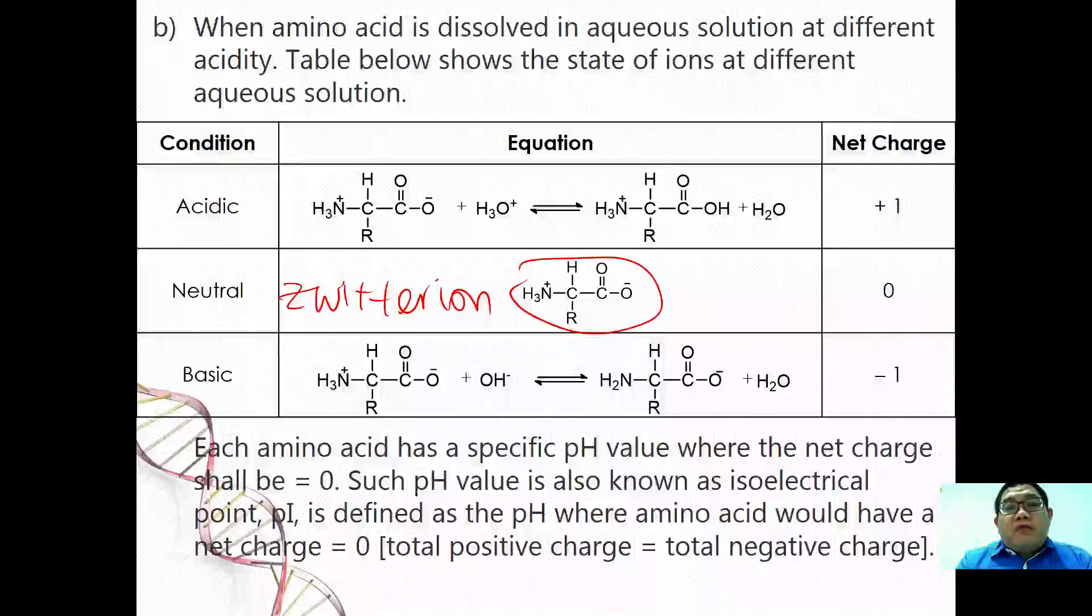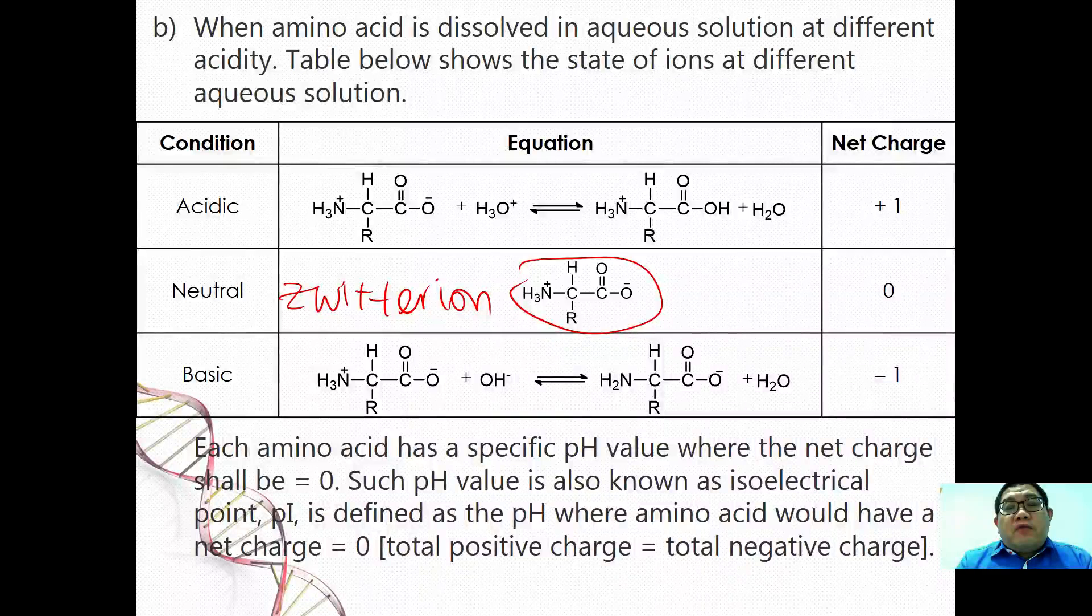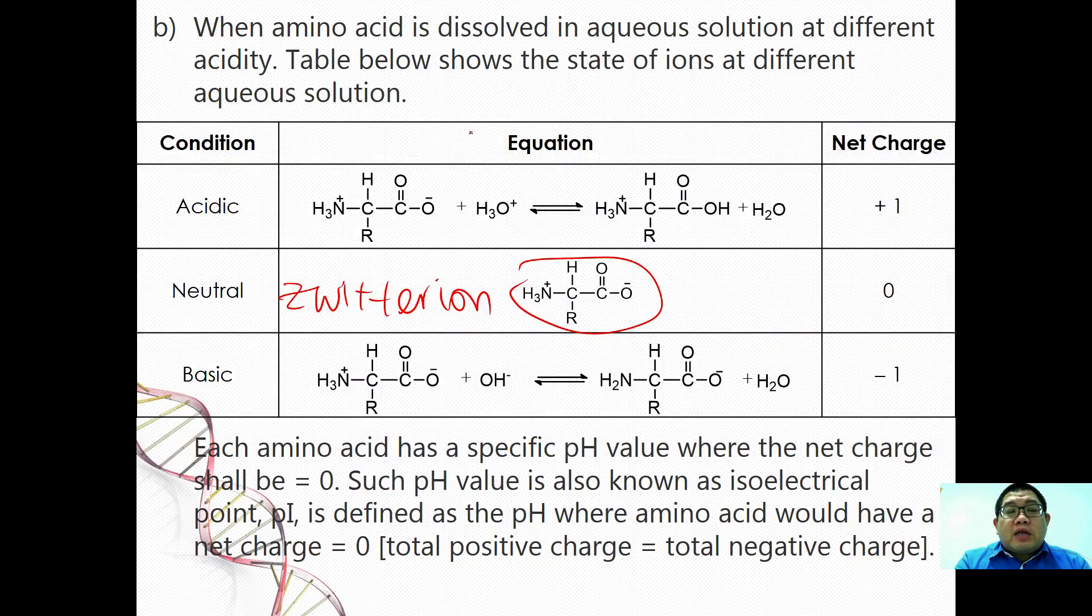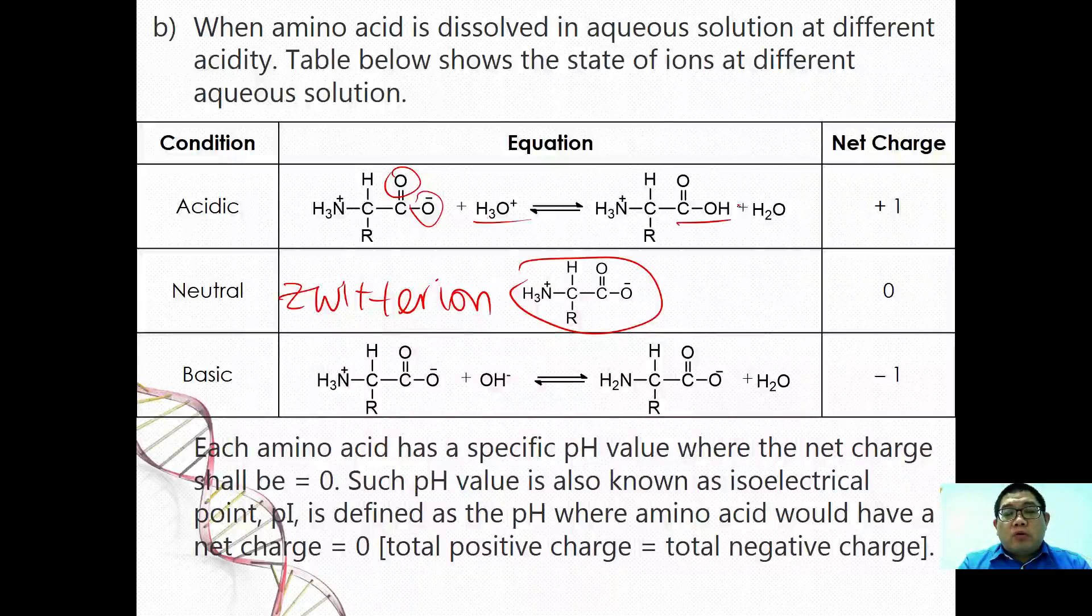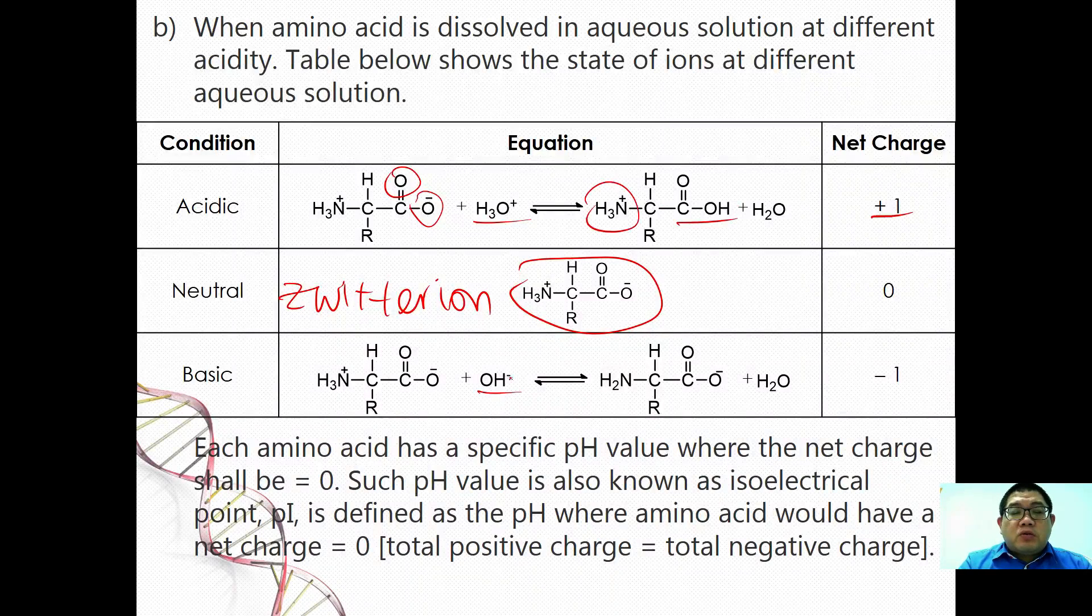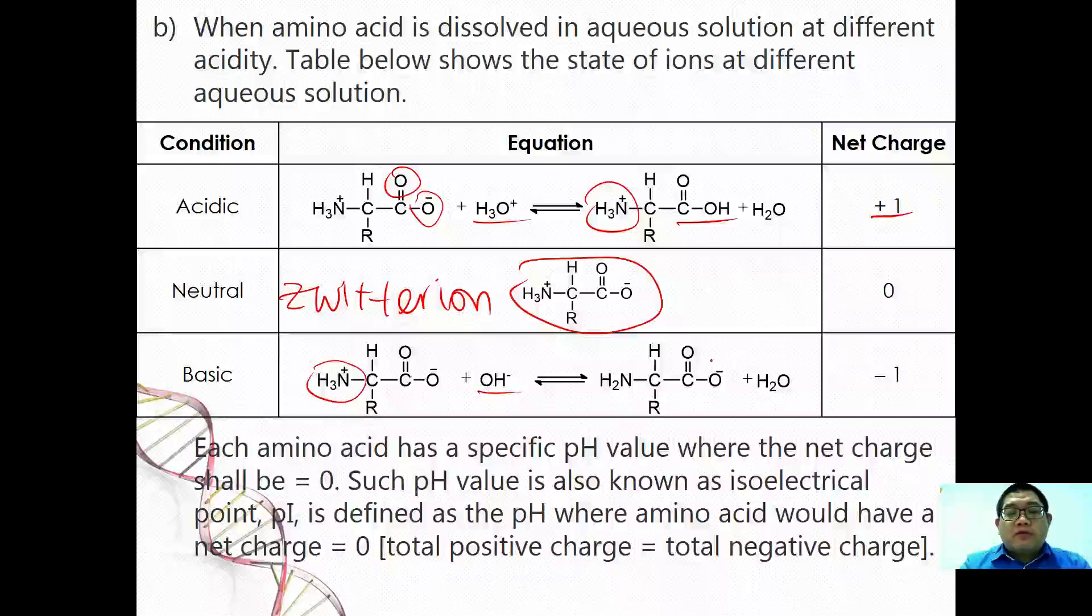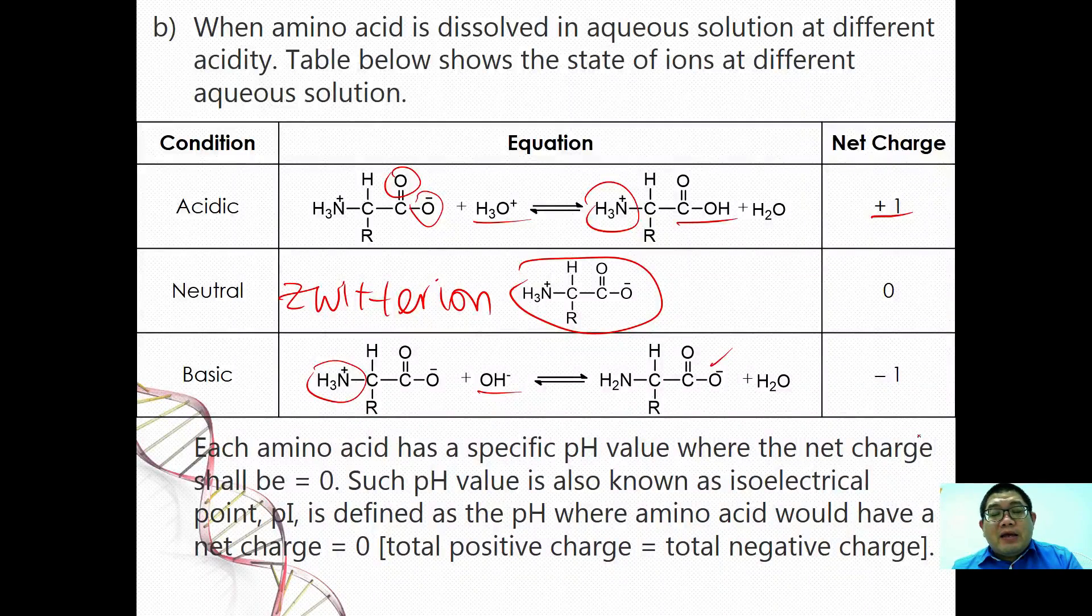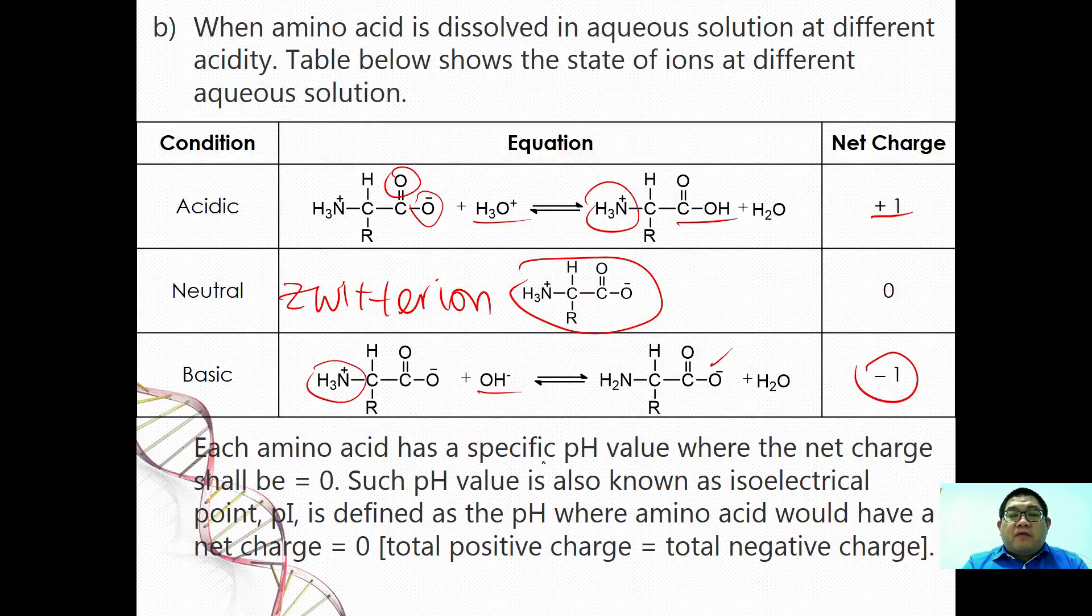Amino acid dissolved in aqueous solution at different acidity will have different forms. For example, if it is reacting under acidic condition, the negative part will react with the H+ to form a COOH, so the net charge will be +1. And react with a basic solution, the OH- will react with NH3+ to form the COO-, so the overall net charge will have -1.